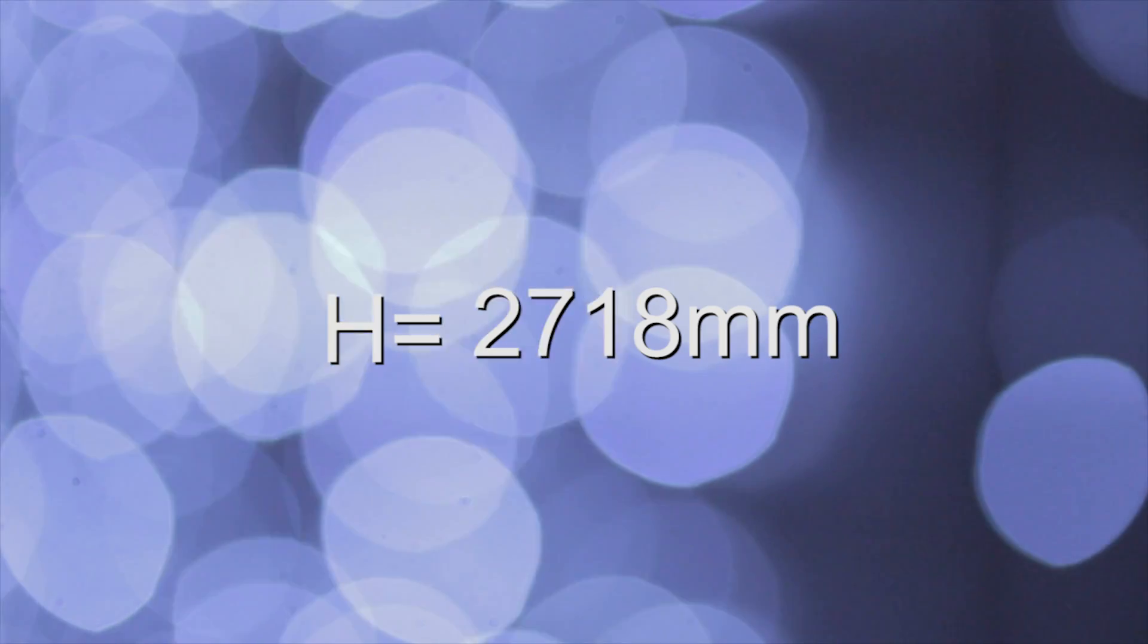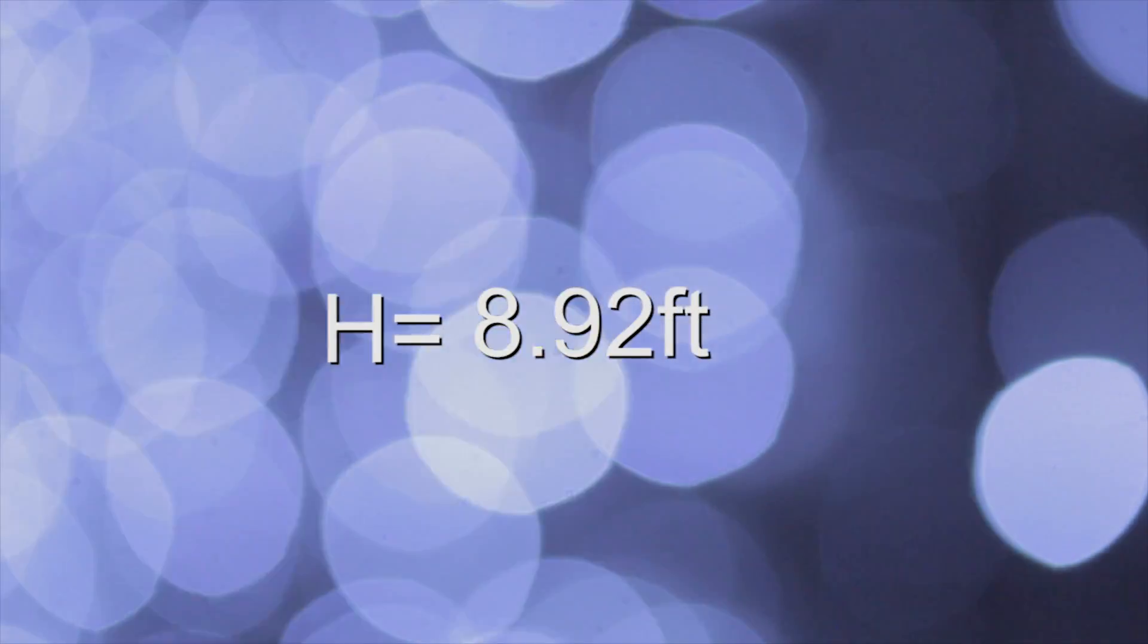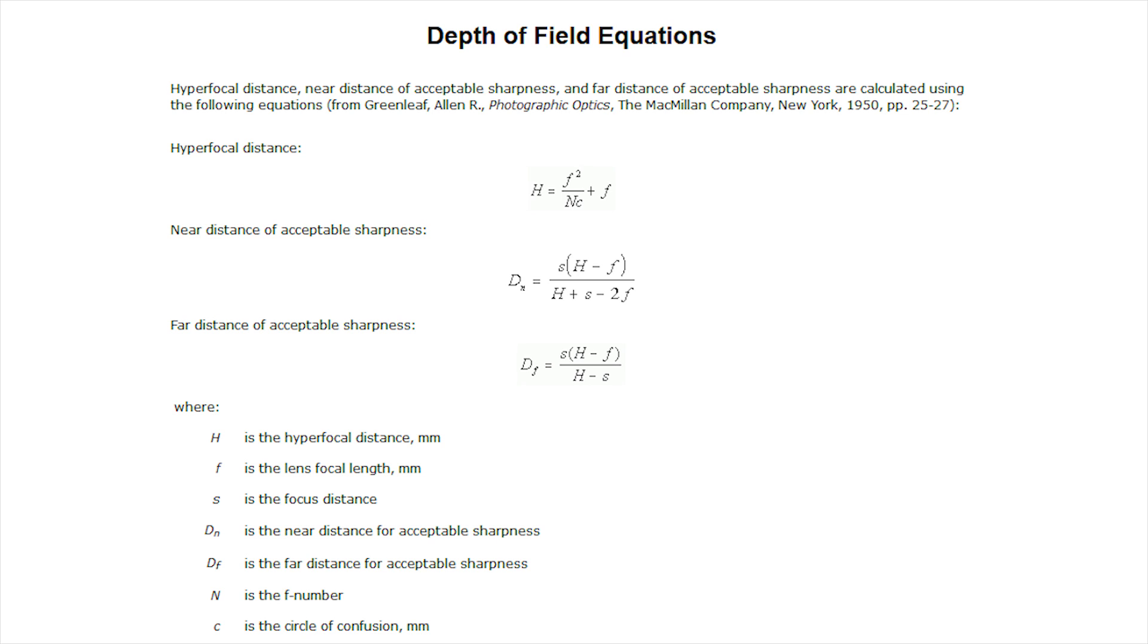Which gives us H equals 2718mm or 8.92 feet. Now that we know our hyperfocal distance, we can plug this back into our other equations and calculate our near distance of acceptable sharpness.